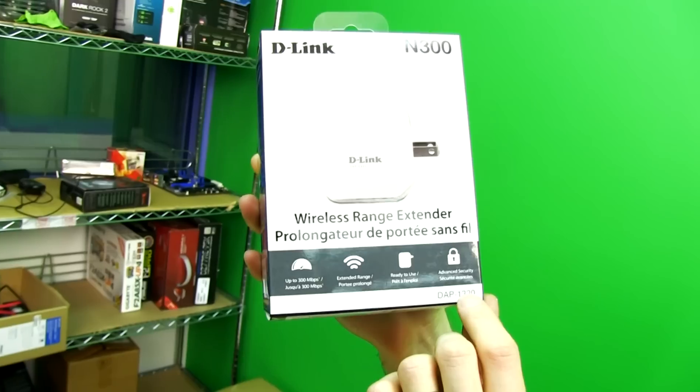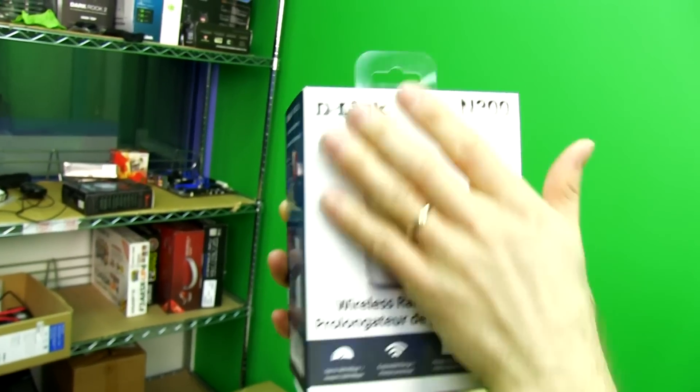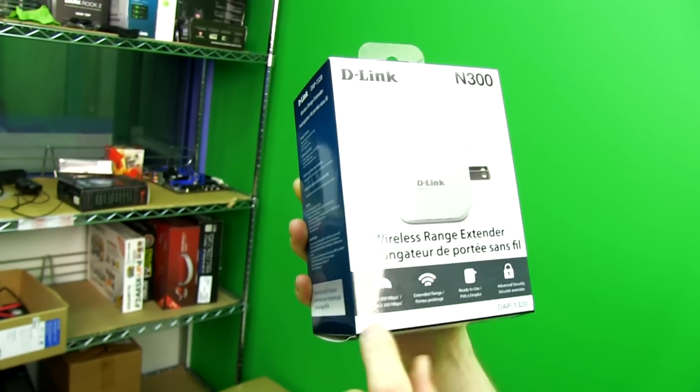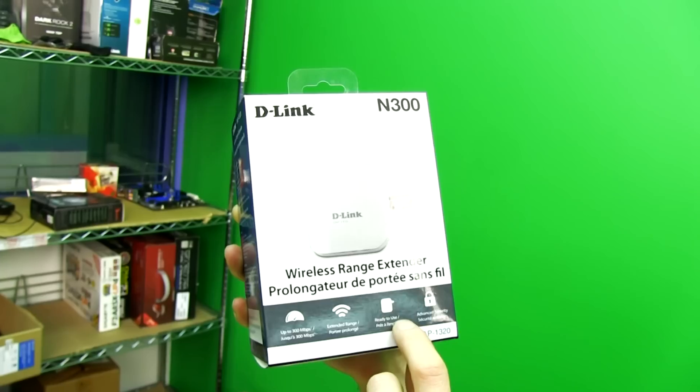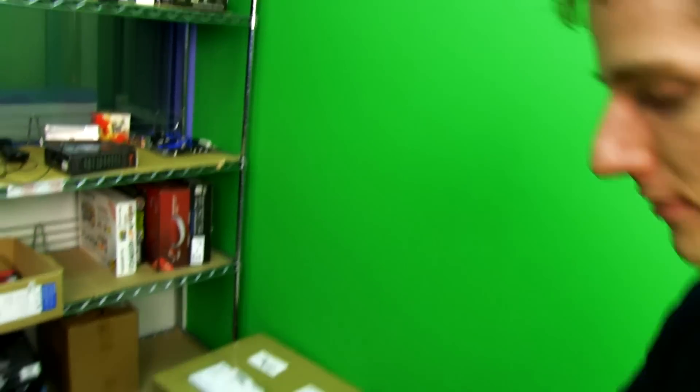Welcome to my unboxing and first look at the D-Link DAP1320. This is an N300 wireless range extender, operates at up to 300 megabit per second, gives you extended range, it is ready to use, and features advanced security.